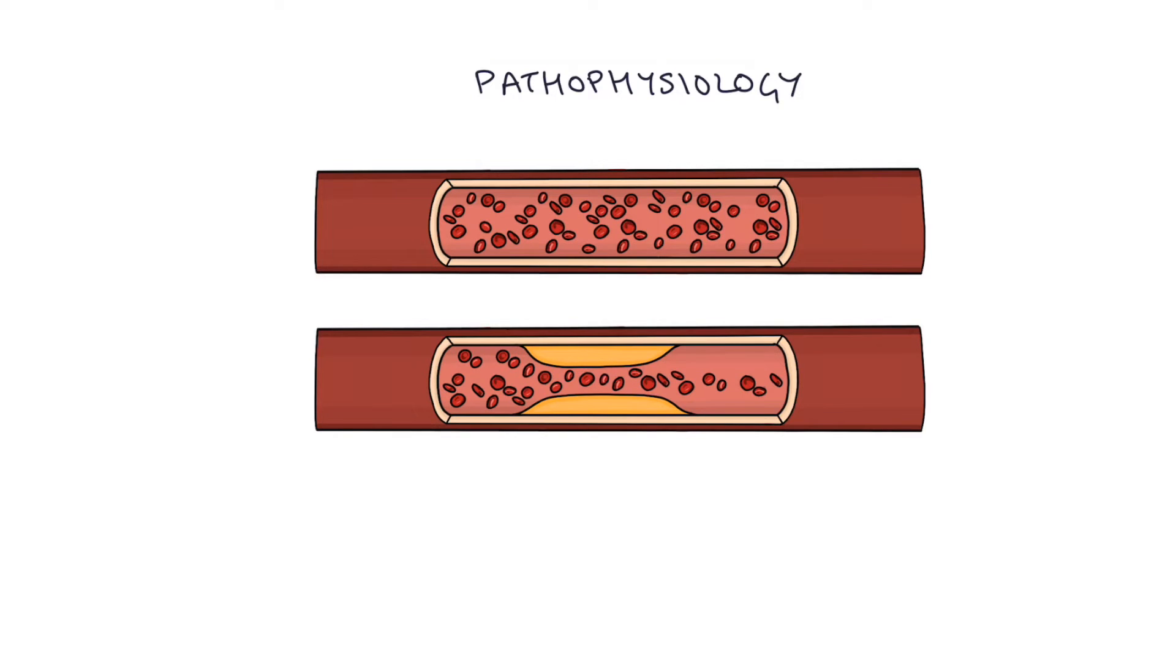So if you compare the blood flow through these two blood vessels, the healthy one and the atherosclerotic one, the healthy one clearly has very good flow all the way through whereas the atherosclerotic one you get a build up of blood behind the plaques and only a very narrow trickle of blood through the diseased part of the blood vessel.